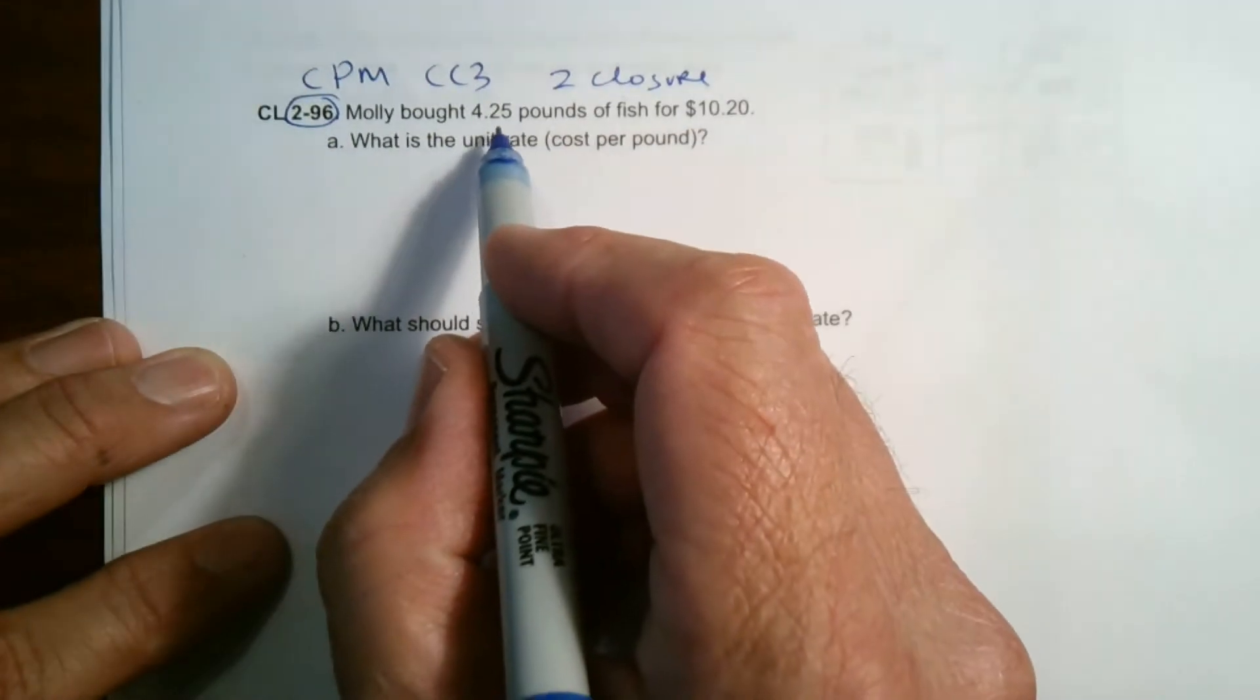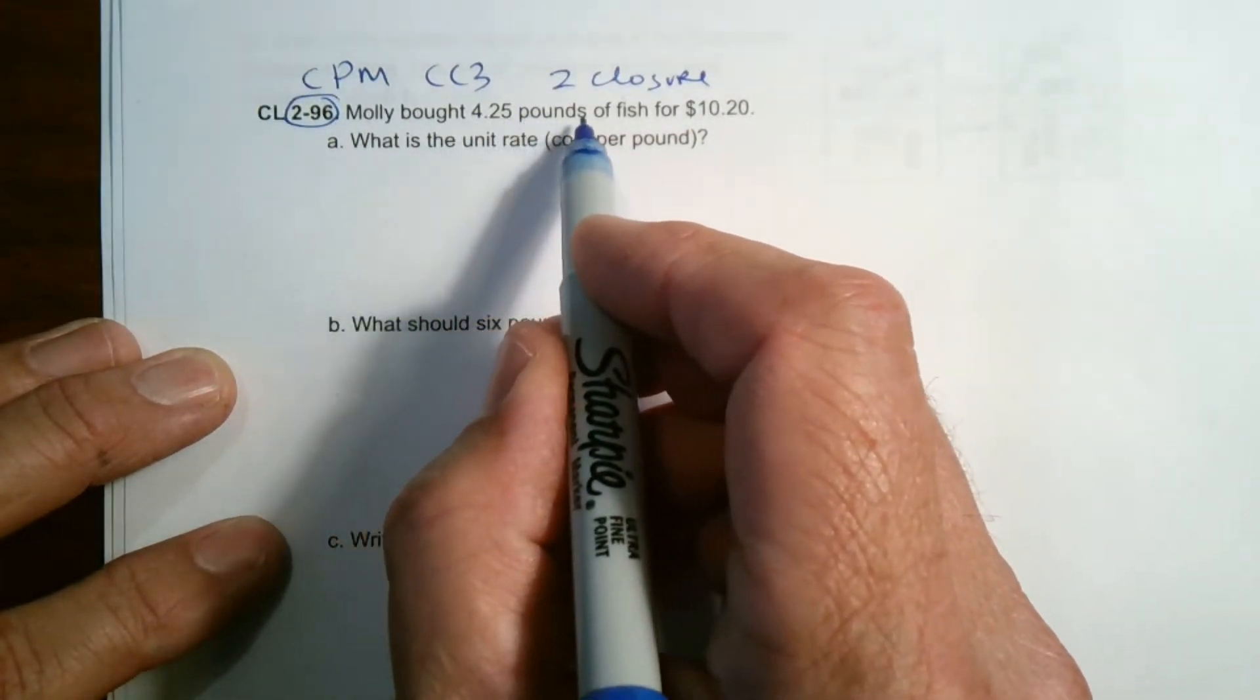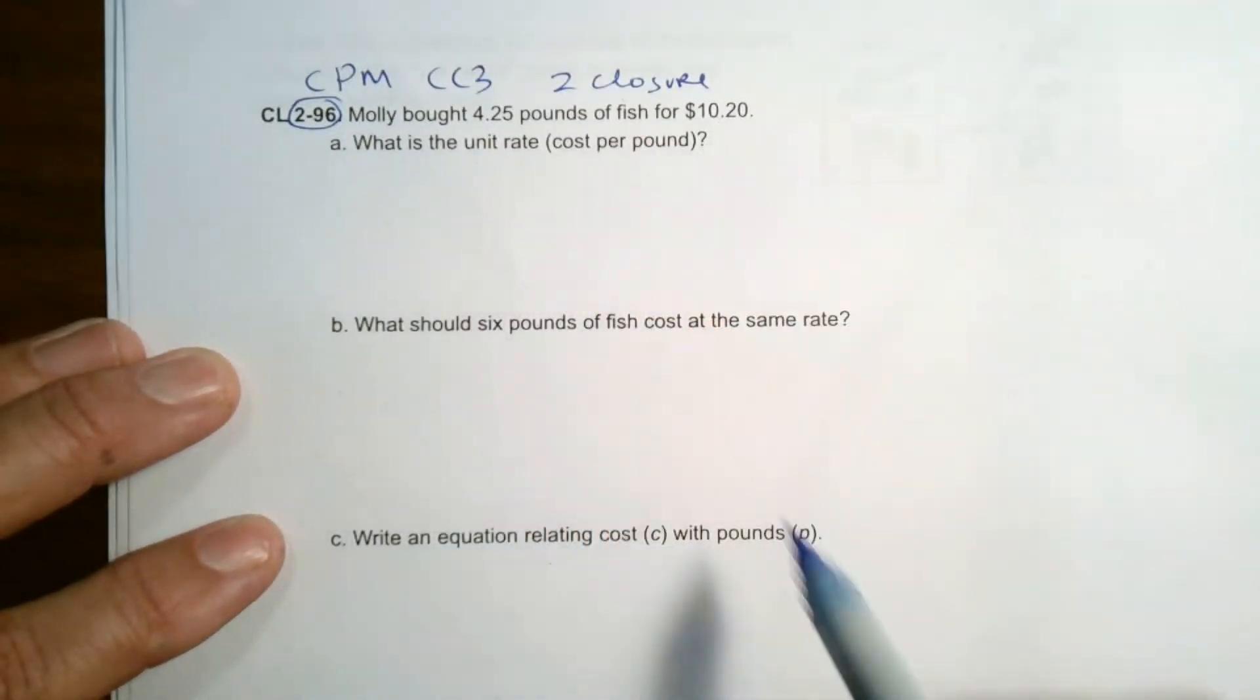Molly bought 4.25 pounds, four and 25 hundredths pounds of fish for $10.20.